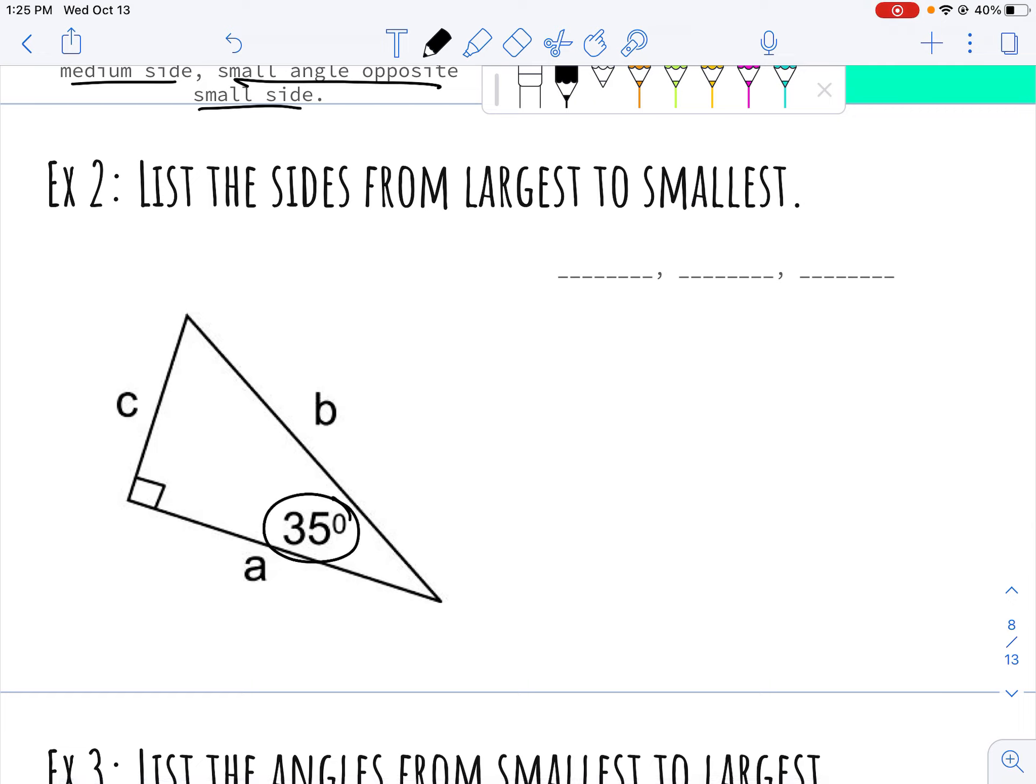So we're going to practice this. I have 35 degrees here, I have 180 degrees total in a triangle, so minus 90 is 90, minus 35 is 55. I'm going from largest to smallest, my biggest angle is 90, across from 90 is B.